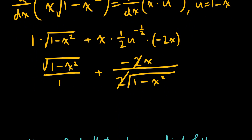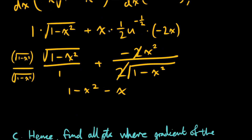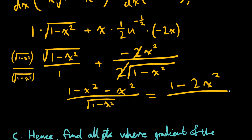Putting these on the same denominator — I'm going to put this over 1, and we multiply the top and bottom by the square root of 1 minus x squared. We can do this because these would cancel out to 1, so we're multiplying by 1 secretly. What we get is 1 minus x squared minus x squared divided by the square root of 1 minus x squared. These two x squared terms combine to give 1 minus 2x squared divided by the square root of 1 minus x squared, which is the same as the question.